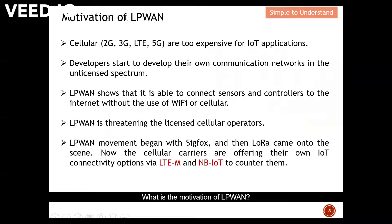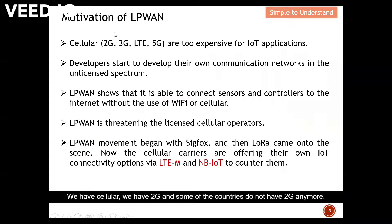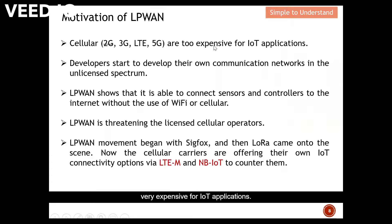What is the motivation for LPWAN? We have cellular, 2G — some countries no longer have 2G — and we also have 3G, LTE, and recently 5G. But all of these are very expensive for IoT applications.